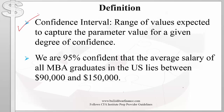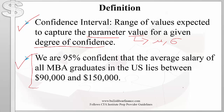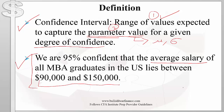What is a confidence interval? A confidence interval is a range of values expected to capture the parameter value for a given degree of confidence. A parameter value refers to things like the population mean mu or the population standard deviation sigma. Going back to the statement from the previous slide, we can see it is a 95% confidence interval because it has a range of values, it is capturing a parameter value — the population mean, or average salary of all MBA graduates in the US — and it has a degree of confidence. So it meets all the criteria for a confidence interval.